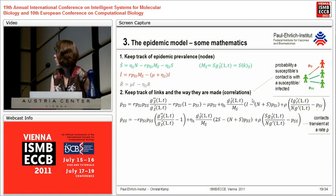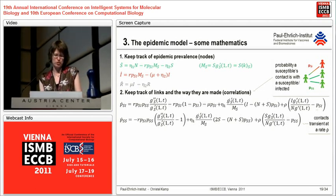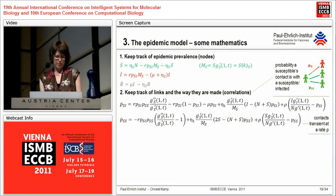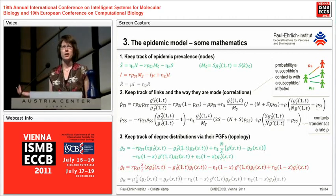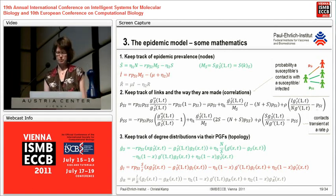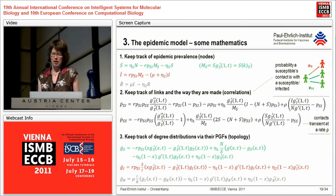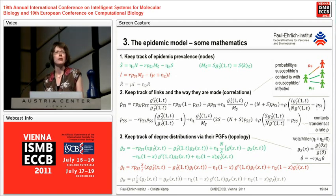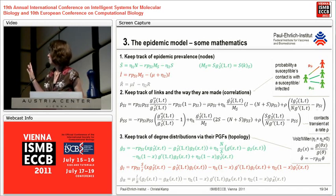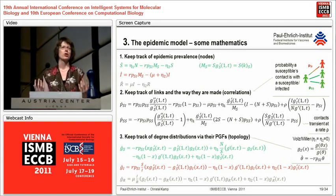To close the set of equations, you also have to write down equations for the probability generating function of the degree distribution among susceptible, infected, and recovered persons, because we really would like to follow the whole topological evolution. For those more familiar with epidemiology, this approach is closely related to earlier work of Waltz and Miller, but they did not address demographic change and did not focus as much on the topological evolution.